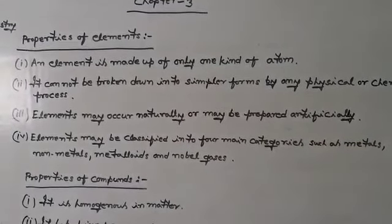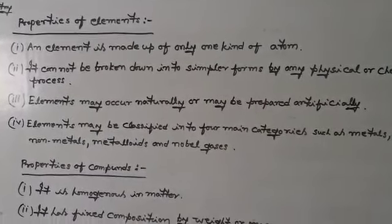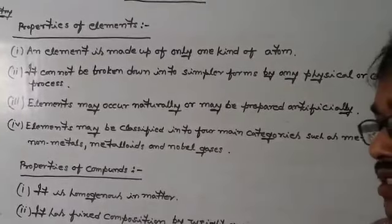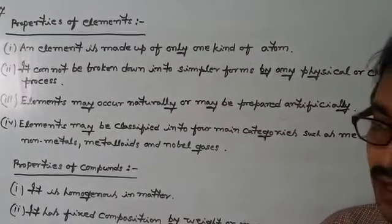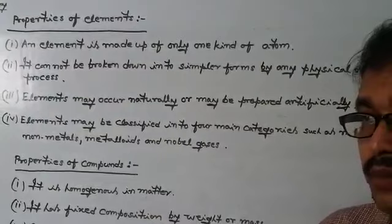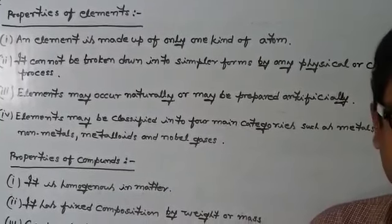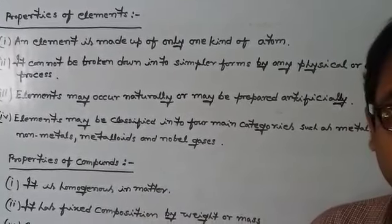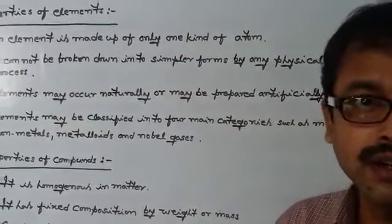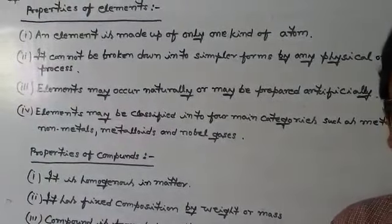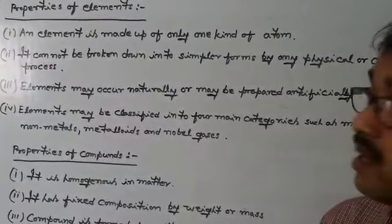The second property: it cannot be broken down into its further simpler forms by any means, either physical means or chemical means. That means an element is the simplest form of substance which exists in nature and which cannot be further simplified by any means, either physical or chemical.